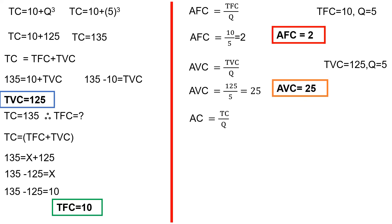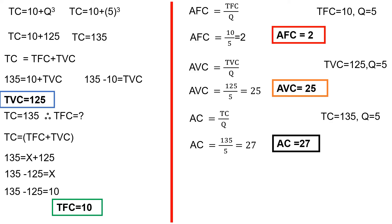Then, AC is equal to TC divided by q. TC value is already 135. Substituting q value of 5: 135 divided by 5. The answer is 27. Therefore, AC is equal to 27.